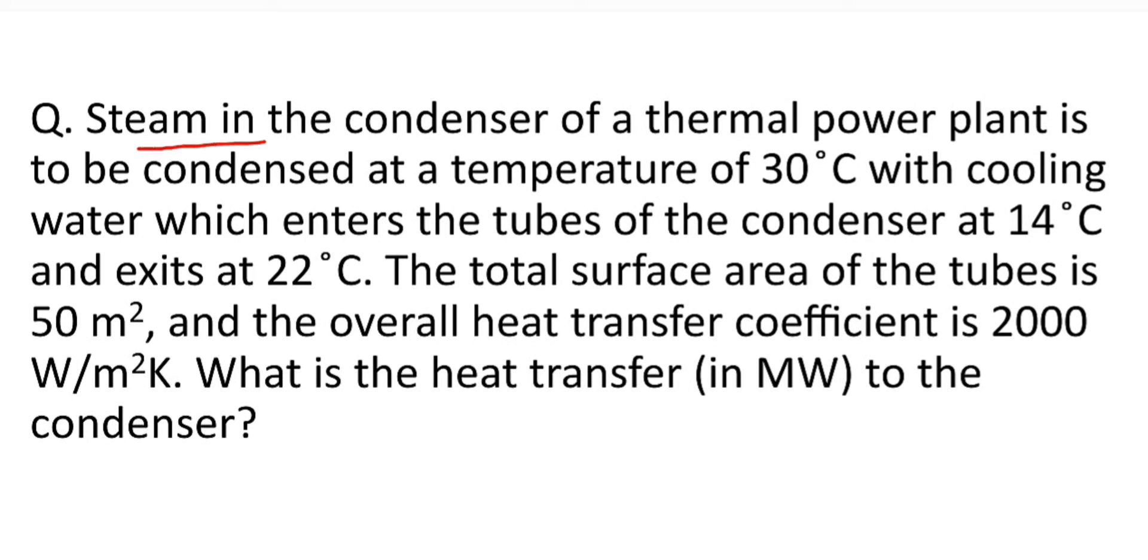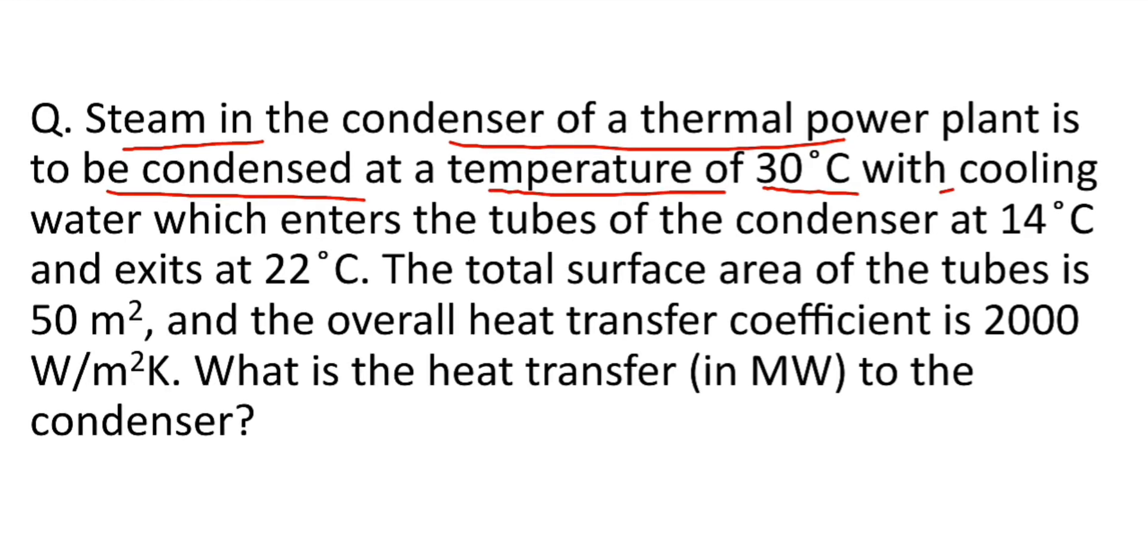Here, steam in the condenser of a thermal power plant is to be condensed at a temperature of 30 degree Celsius. And to condense, cooling water is used which enters the tube of condenser at 14 degree Celsius and exits at 22 degree Celsius.